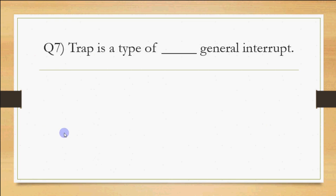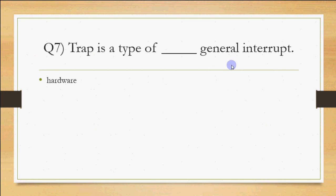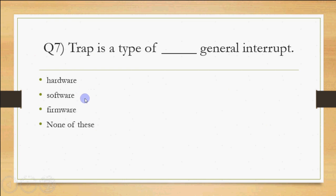Number system questions are common and straightforward, as discussed. There are also operating system questions. For example: 'Trap is a type of what kind of interrupt?' A trap occurs when the system stops unexpectedly for some reason. Interrupts are of two types: hardware interrupts and software interrupts. A trap is caused by a hardware problem, so the answer is: trap is a kind of hardware interrupt.